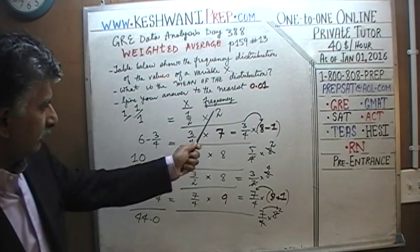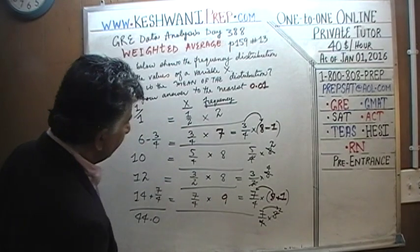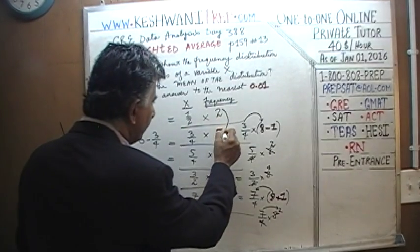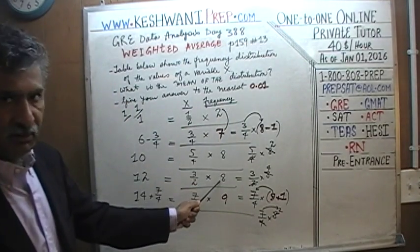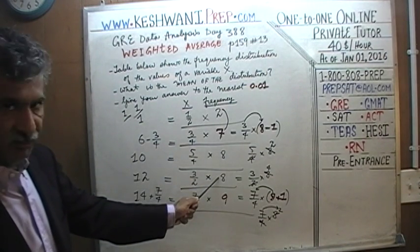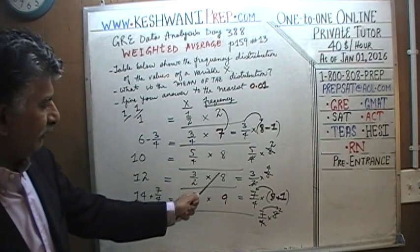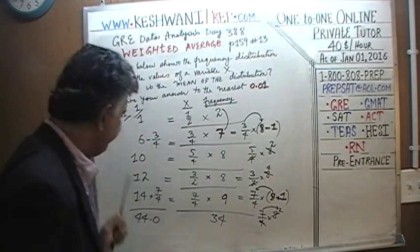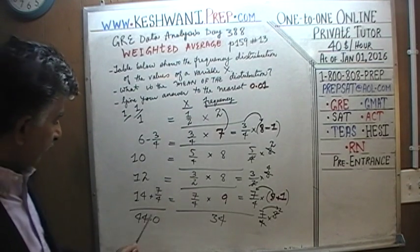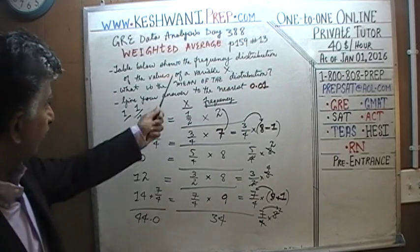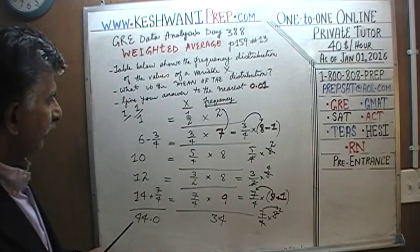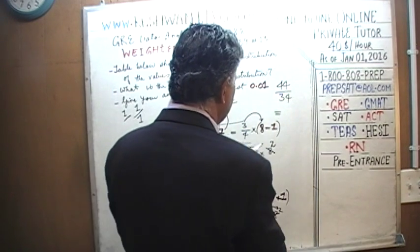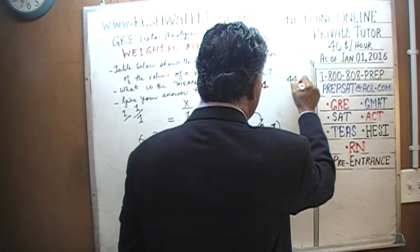We have to divide this total by the number of observations. Let's figure that out: seven plus two is nine, nine plus nine is eighteen, eighteen plus sixteen — eight plus eight is sixteen — so sixteen plus eighteen is thirty-four. We have 34 total observations. So we divide 44 by 34.